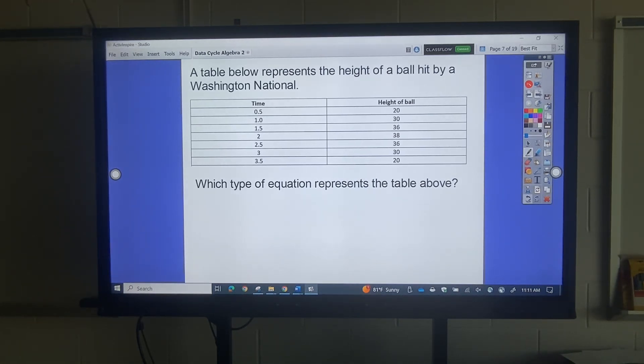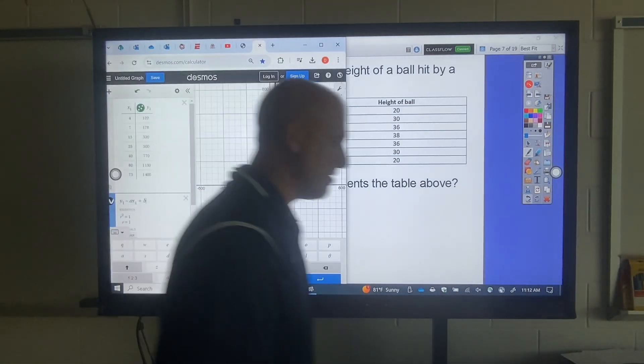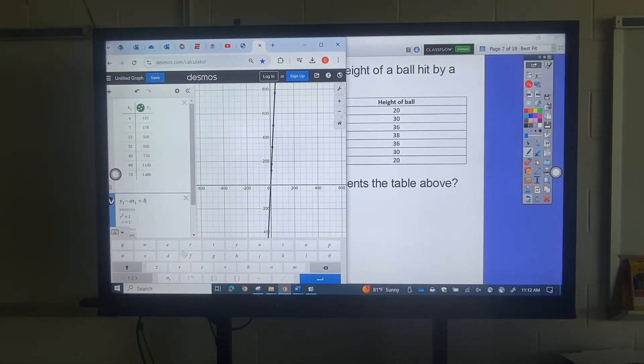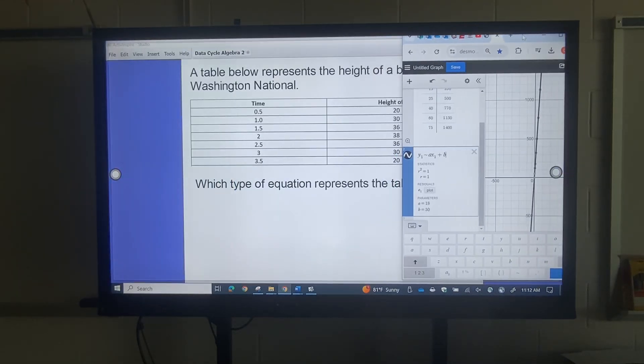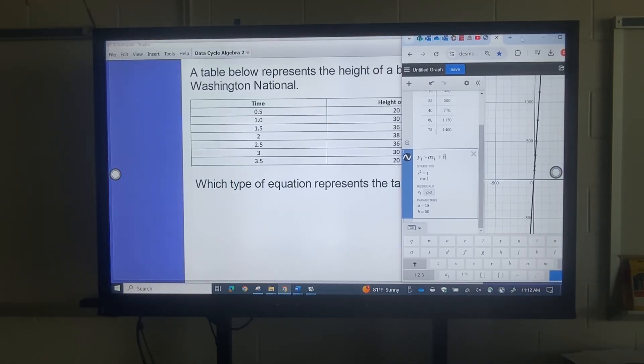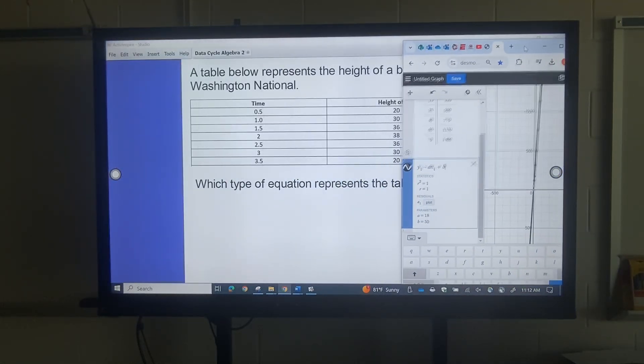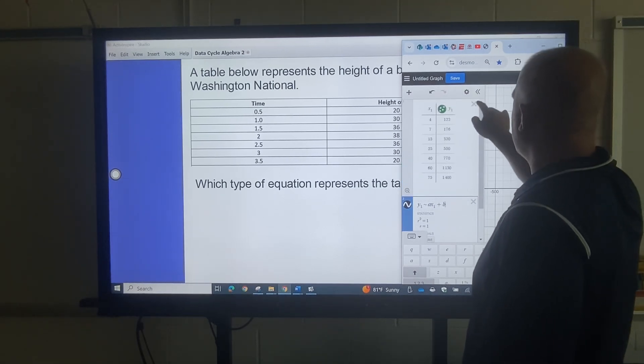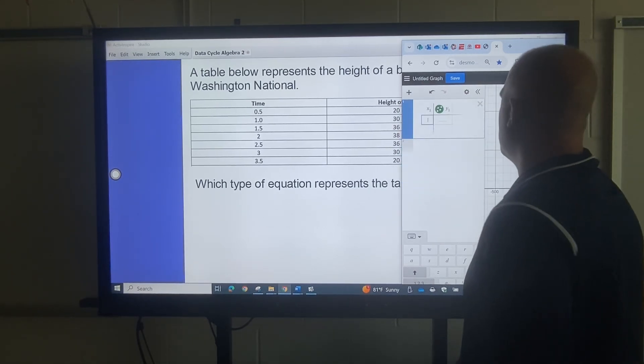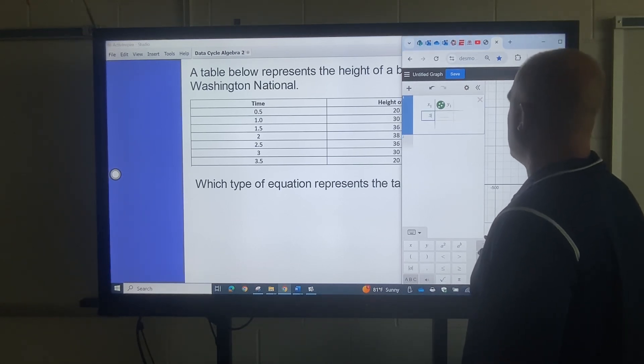It says a table below represents the height of a ball hit by a Washington national. So let me see if I can shrink this up a little bit so that I don't have to keep turning this back and forth. So once again, I'm going to clear this table out. We get plus table.